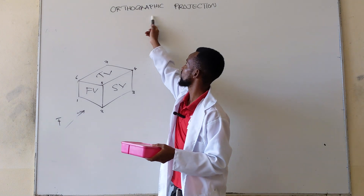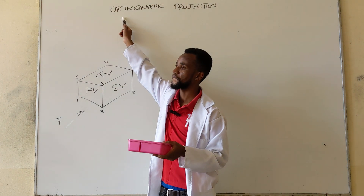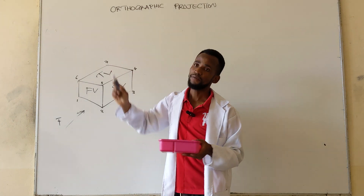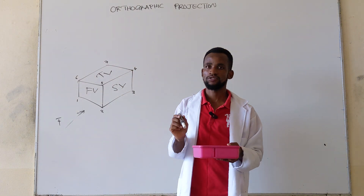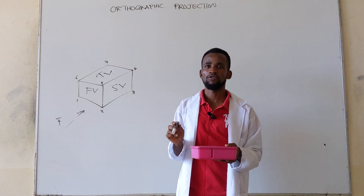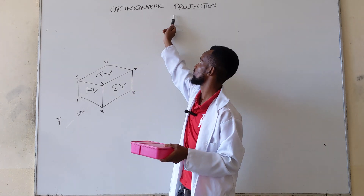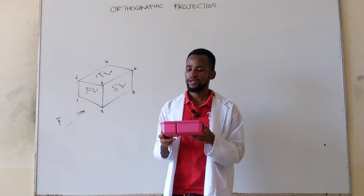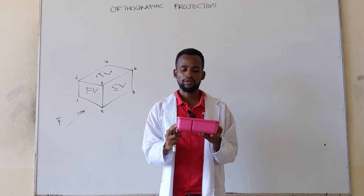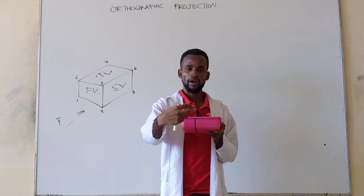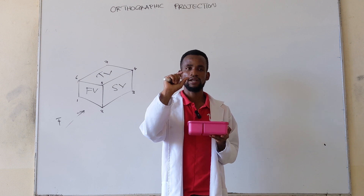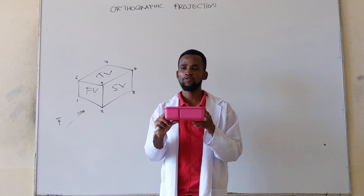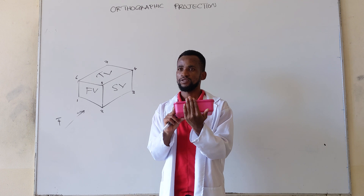These views are what we call orthographic views. Orthographic has got two words in it. This 'ortho' means 90 degrees or right angle. The 'graphic' is just the graphic for drawing or any graphic. So when you say orthographic, you mean you have to look at it at 90 degrees, and your side should be at right angle with the face that you are drawing. That is the basis for our discussion.